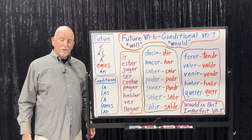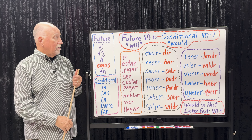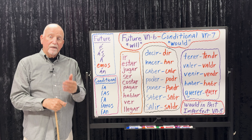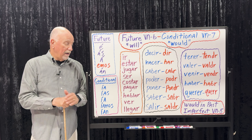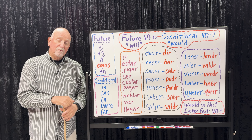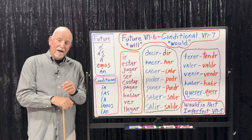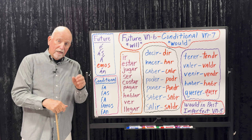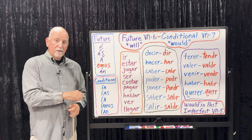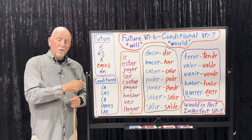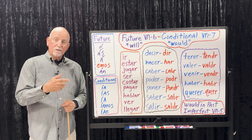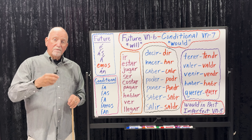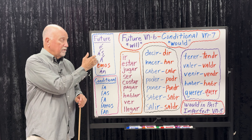That's how you work with the future and the conditional. Many times the future tense is overlooked, and people use the IR + A + infinitive construction instead. For example, 'it will rain' — lloverá — but most people would say va a llover. 'We will go' — iremos — but more commonly vamos a ir. 'It will cost a lot' — costará mucho — but people often say va a costar mucho. Know that IR + A + infinitive is used many times in place of the future, and you can use either one.